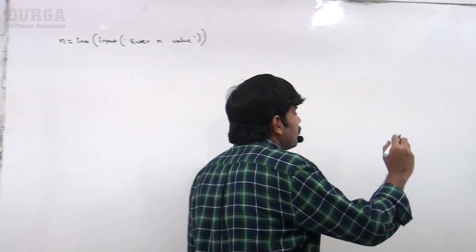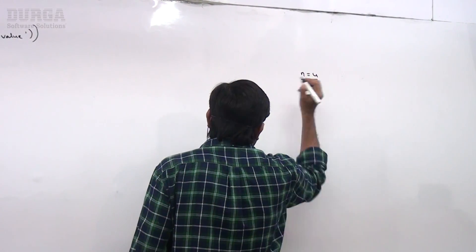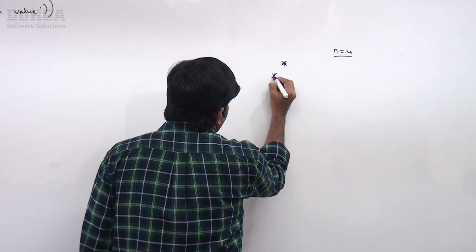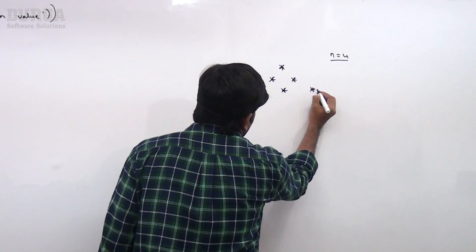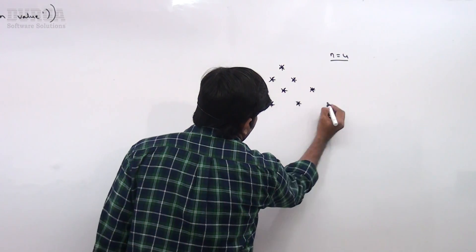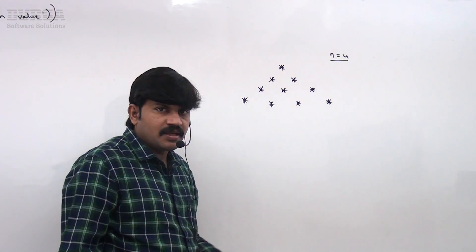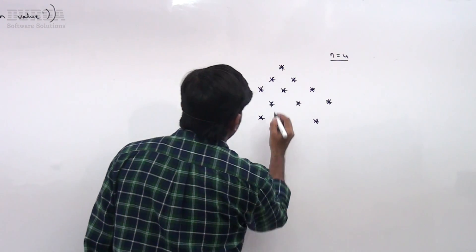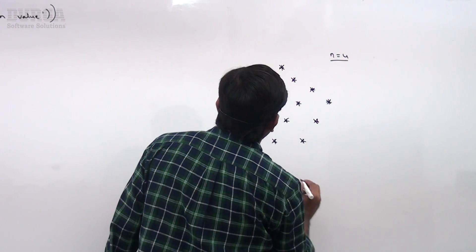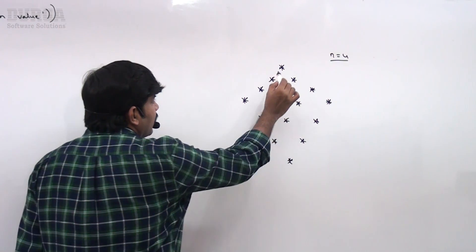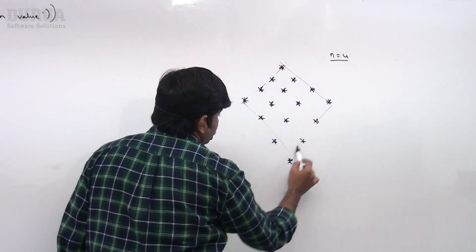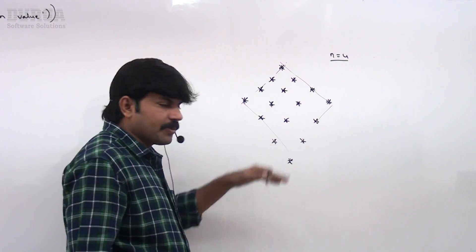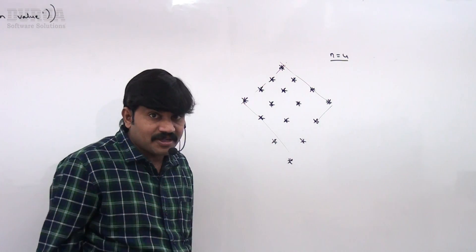Let's understand the diamond pattern. If we take n equal to 4, the expected output looks like a pyramid on top followed by an inverted pyramid below — that diamond shape. So the diamond is nothing but pyramid plus inverted pyramid combined together.